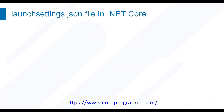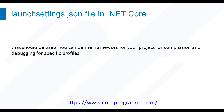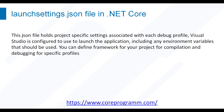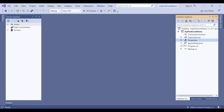Welcome to Core Program. In this video we discuss the launchSettings.json file in .NET Core. The launchSettings.json file describes how a project can be launched — the command to run, whether the browser should be opened, which environment variables should be set, and so on. This information is then used by .NET to run or debug our application.